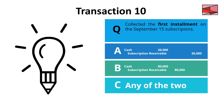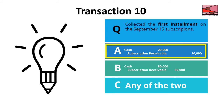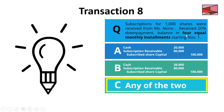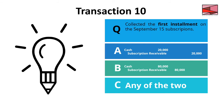Transaction 10: Collected the first installment on September 15 of Aquino's subscription. The answer is letter A — the first installment means: balance is 80,000 ÷ 4 installments = 20,000 per installment. So the first installment received is 20,000 — debit cash 20,000, credit subscription receivable 20,000.